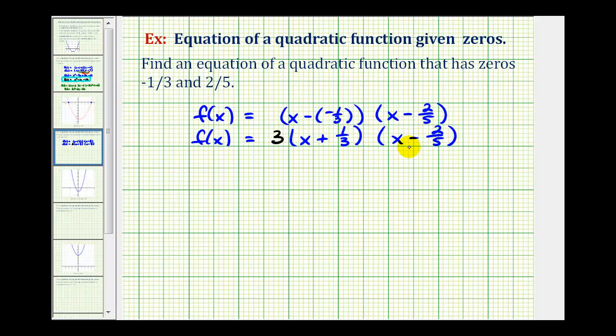Notice the second factor has a denominator of five. If we multiply the second factor by five, it would eliminate the denominator in the second factor. And since three times five is equal to fifteen, this would be the same as multiplying our two factors here by a constant of fifteen.